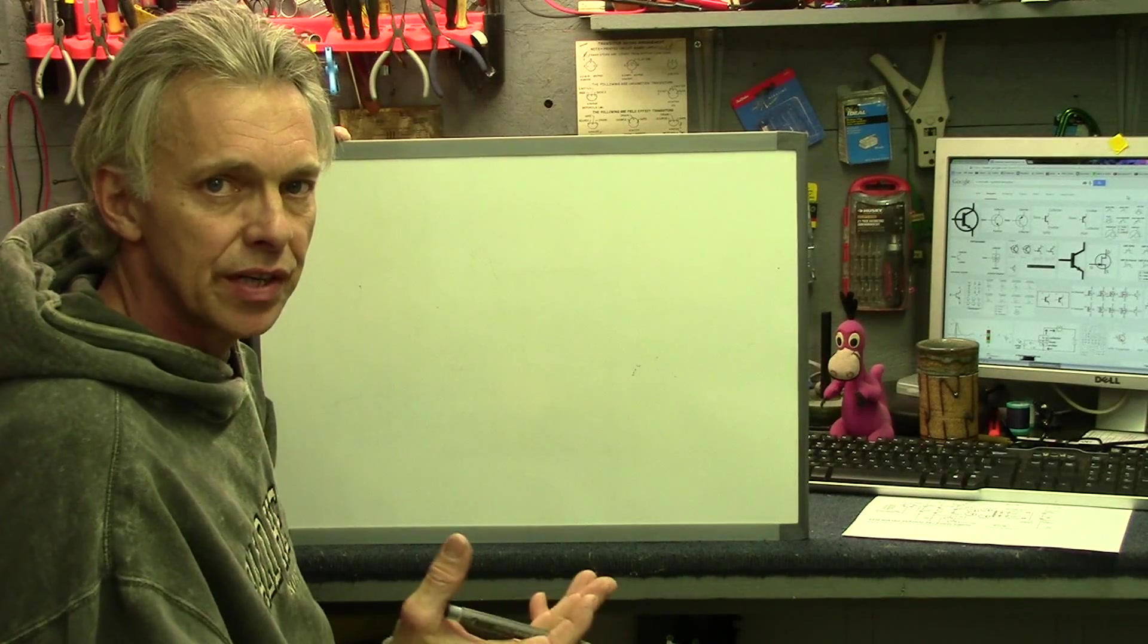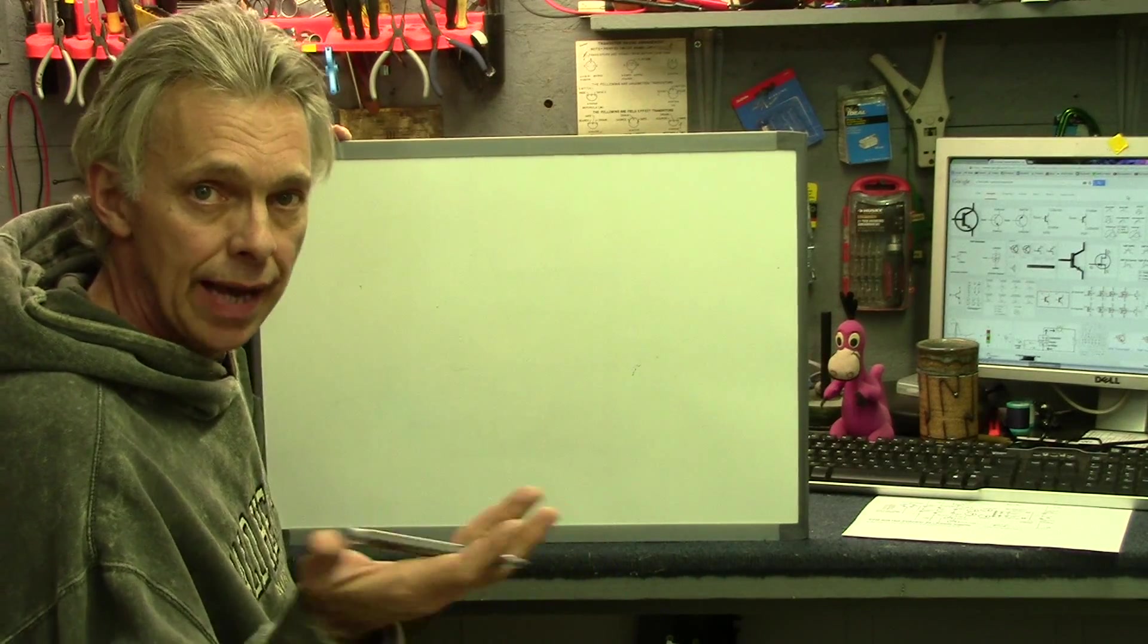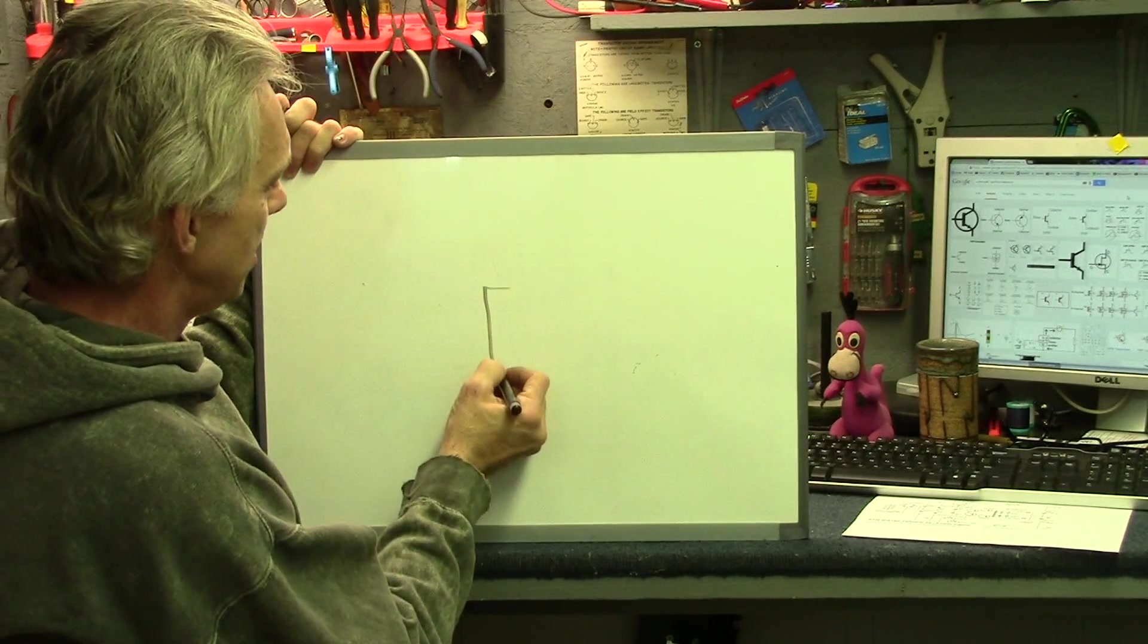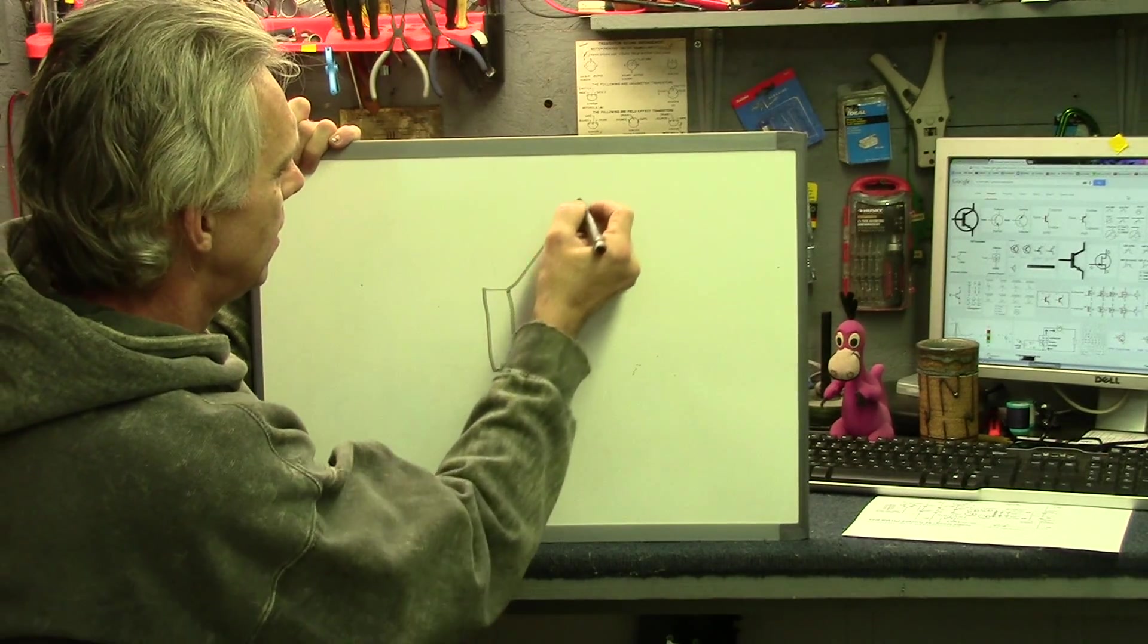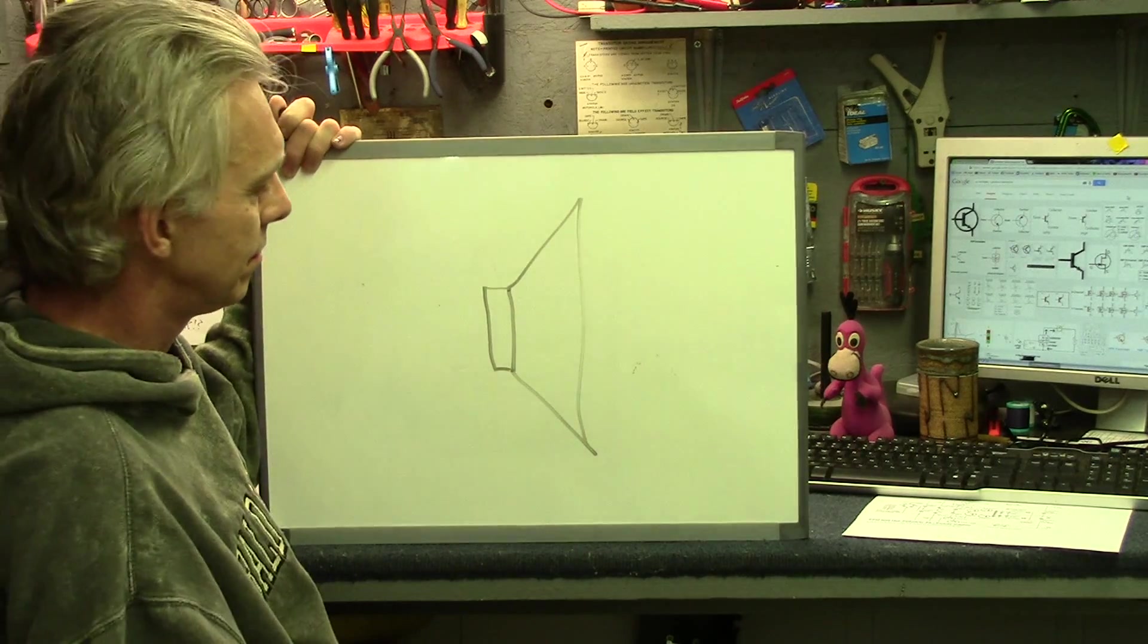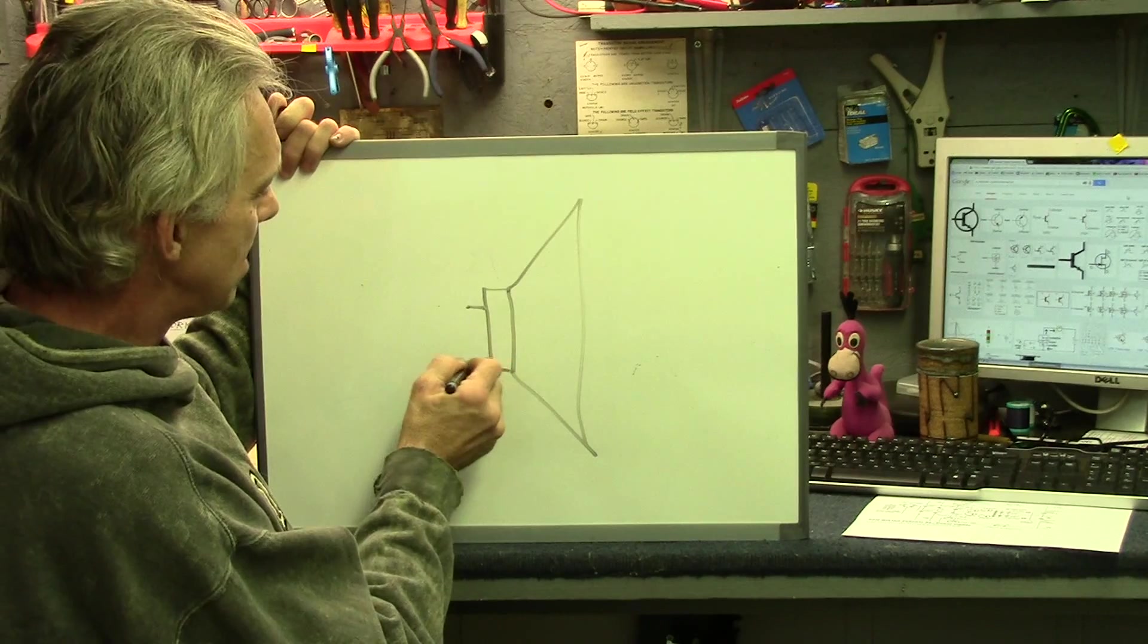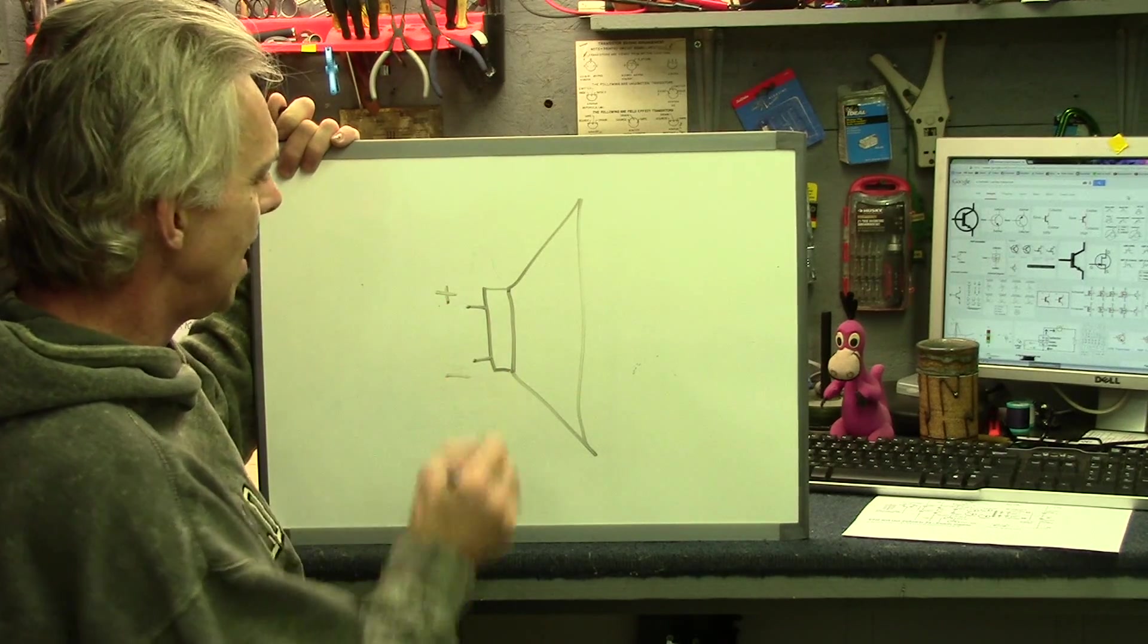In an amplifier circuit, you'll see the symbol for a speaker. And it looks quite like a speaker, actually. This would be the magnet, and this would be the driver. That's a speaker. Sometimes you'll see two leads coming off marked positive and negative.